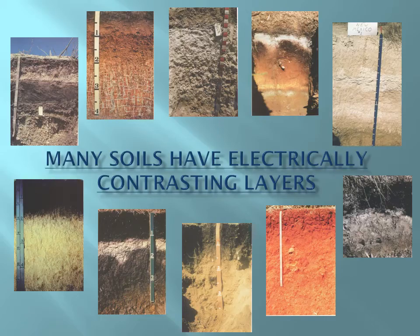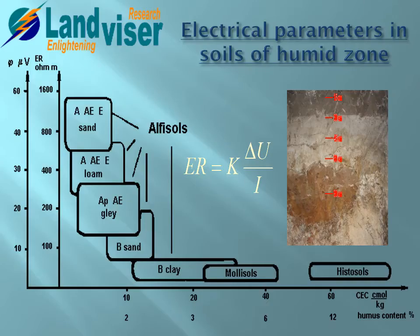Many soils have layers due to soil-forming processes. For example, the process of eluviation leaches electrical charges down the soil profile, creating horizons. In the humid zone, there are alfisols, mollisols, and histosols. We measured different electrical potentials and electrical resistivity in those illuvial horizons, which have different textures — clay horizons and sandy horizons. According to Ohm's law, resistivity is directly related to electrical potential, and higher resistivity implies higher potential differences in the soils.